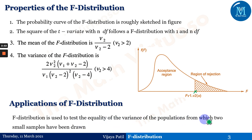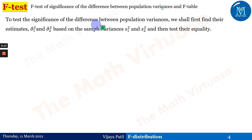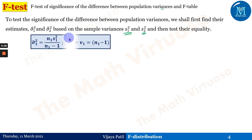The F-test is used to test the significance of the difference between population variances, and we'll also discuss the F-table. To test the significance of the difference between population variances, we first find their estimates μ̂₁² and μ̂₂² based on sample variances s₁² and s₂², and then test their equality. Different books use different notation such as sx², sy², and so on; we will stick to the notation from the standard statistics textbook.